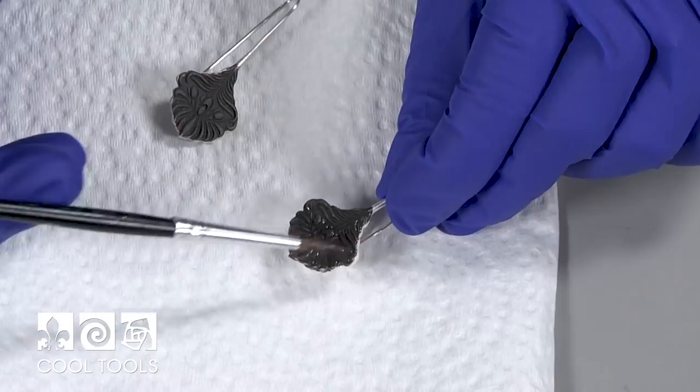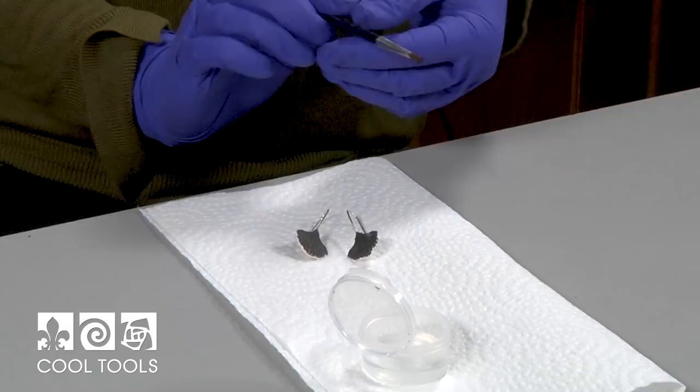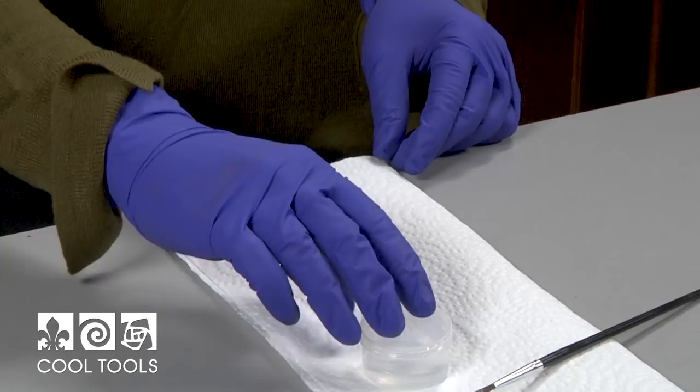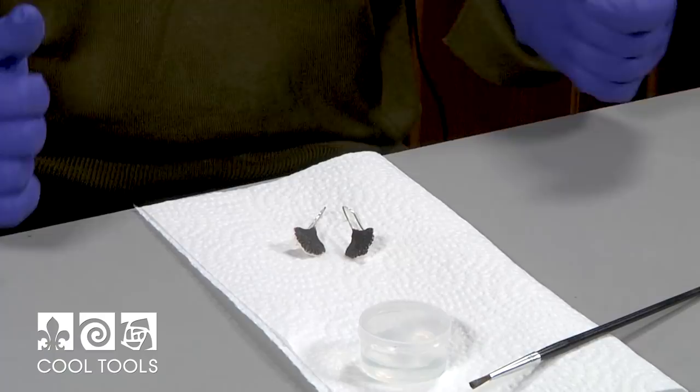All right. And then to again make sure that I'm going to avoid skin contact, now that my pieces are darkened, I'm going to take them over to the sink and thoroughly dip them to rinse them before I start sanding and removing the patina.